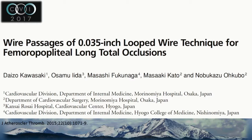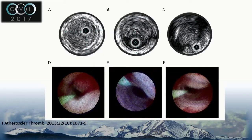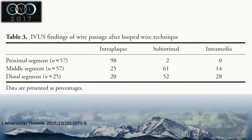One study done in Japan looked at cases where they purposely used a looped wire technique to go subintimal — 57 patients with an 035 looped wire technique. They confirmed position after crossing with IVUS and angioscopy. The left panel shows intraluminal with thrombus, ulcerated plaque, and debris; the middle shows subintimal with a fairly smooth pathway; and the right shows intermedial, described as rough and relatively small. After crossing, 52% were subintimal by the distal segment, 28% were intermedial, but 20% were actually still in the trulumen despite using the looped wire technique.